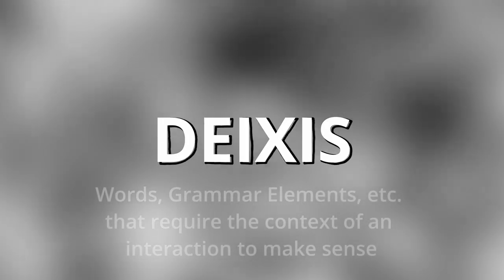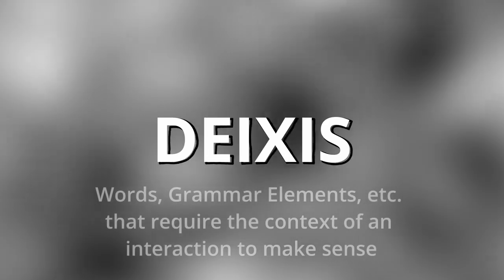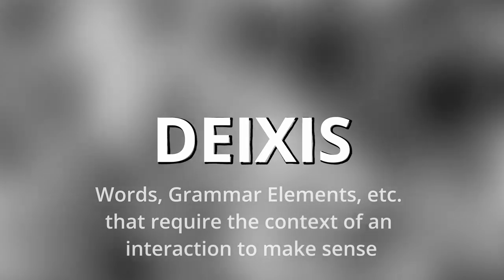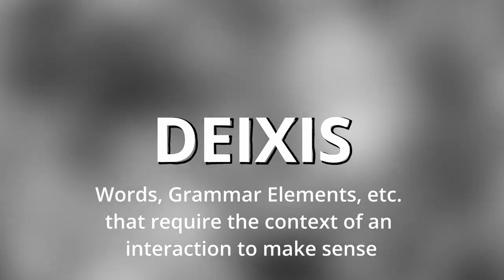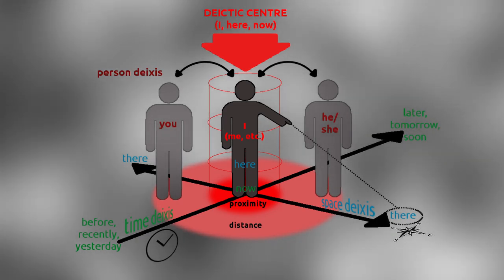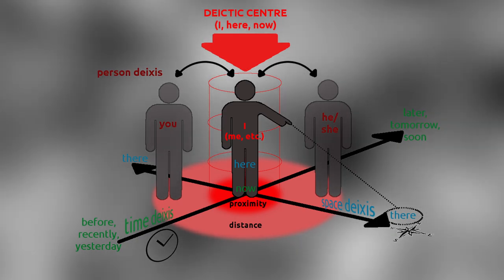So as a concept in linguistics, deixis is the use of general words that are used in context to refer to more specific people, places, times, and so on, that are dependent on context. This includes English words such as here, there, now, then, tomorrow, yesterday, to the left, to the right, even this, that, and even pronouns that require context like I and you. Stuff that only has meaning relevant to the speaker and the listener in a conversation.